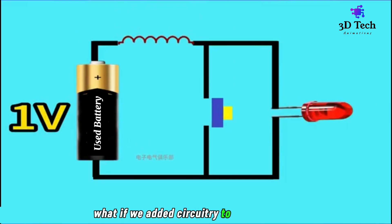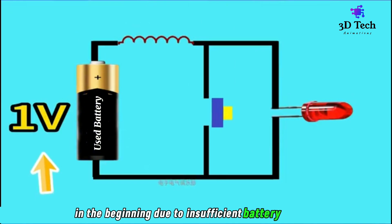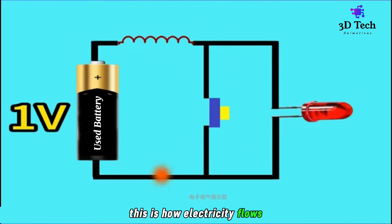What if we added circuitry to these devices? In the beginning, due to insufficient battery voltage, the LED is off. When the switch is pressed, electricity flows through the circuit.